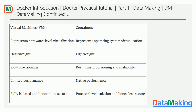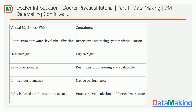Let's recap the differences between virtual machines and containers. Virtual machines represent hardware virtualization, allowing you to create different virtual machines with different operating systems. Containers represent operating system virtualization, so within one operating system you can create multiple containers and host your applications. Because virtual machines have separate guest operating systems they are heavyweight, whereas containers share the same operating system and are lightweight. Virtual machines have slow provisioning, while containers provide real-time provisioning and scalability. Virtual machines have limited performance, while containers have native performance.